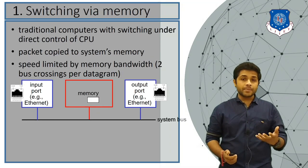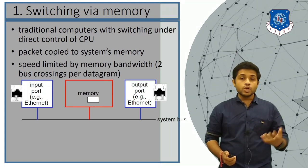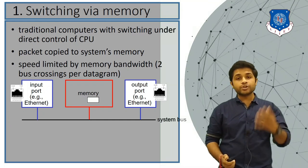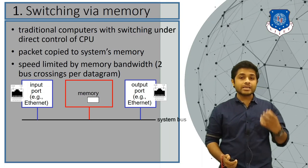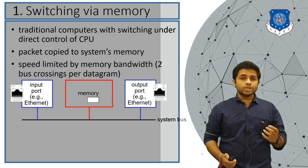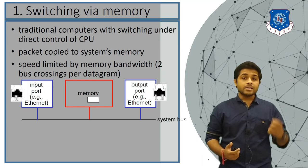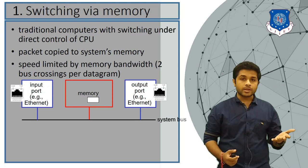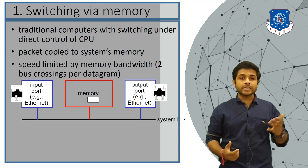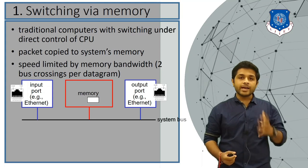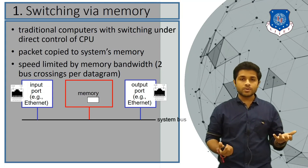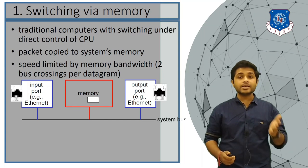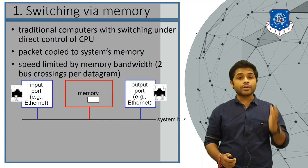In the memory-based switching fabric, the input port receives a packet and stores it into memory, and the output port retrieves the packet from memory. This method is totally dependent on the speed of the memory. If the memory has very high speed, data can be transferred from input port to output port quickly; if the memory is slow, it will take more time. The speed is therefore limited by the memory bandwidth — that is, the speed of reading and writing.